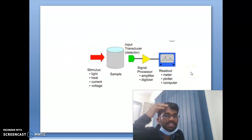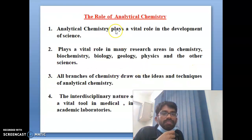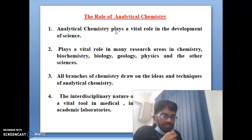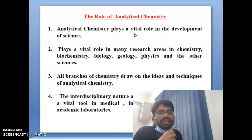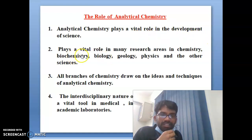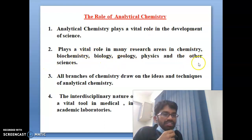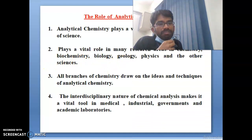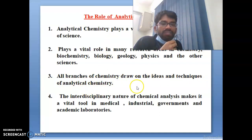The main role of analytical chemistry is that it plays a vital role in the development of science. Nowadays analytical chemistry is used in various science branches like biotechnology, biochemistry, microbiology, and every area. It plays a vital role in many research areas like chemistry, biochemistry, biology, geology, physics, and other sciences. All branches of chemistry draw on the ideas and techniques of analytical chemistry.